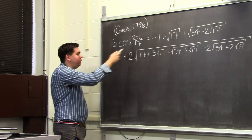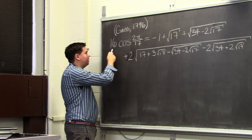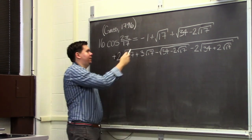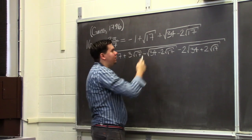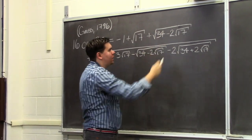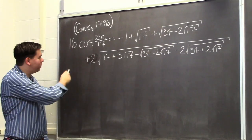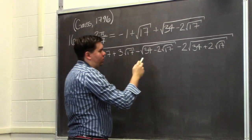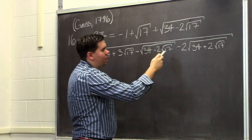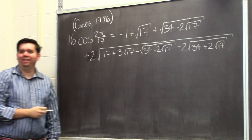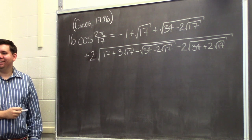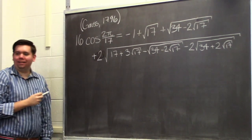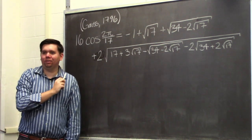On the board, there is an equation for 16 times cosine of 2π over 17. It equals negative 1 plus the square root of 17, plus the square root of 34 minus 2 square roots of 17, plus 2 square roots of 17 plus 3 root 17 minus root 34 minus 2 root 17 minus 2 root 34 plus 2 root 17. This was discovered by Gauss in 1796 when he was 19 years old.